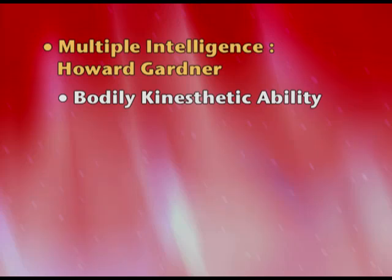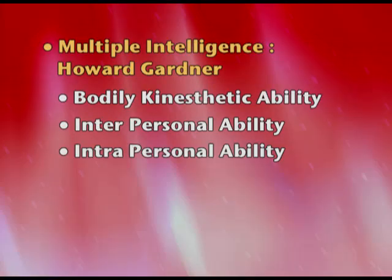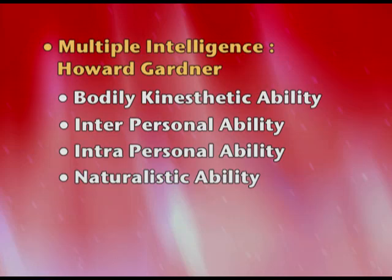Fifth is bodily-kinesthetic, which means body balance, movement, posture, and coordination — kinesthesis means movement. Dancers, choreographers, and surgeons are very good with this ability. Sixth is interpersonal, dealing with other people — counsellors, social workers, and politicians are very good at handling and understanding others. Seventh is intrapersonal, within the person — philosophers dealing with their own thoughts are a good example. The eighth and last is naturalistic ability, dealing with nature, flora, and fauna. Botanists, tourists, and farmers are very good with naturalistic ability.